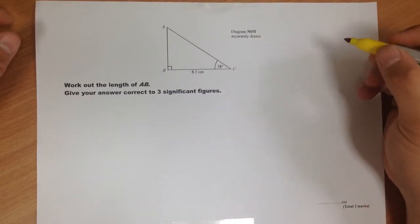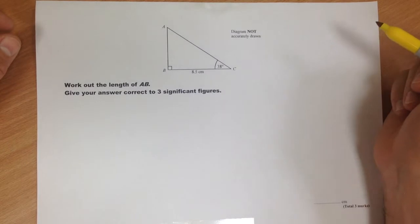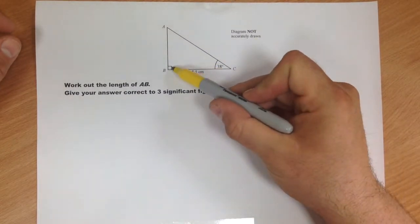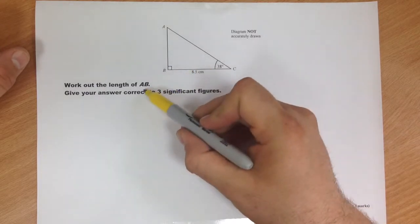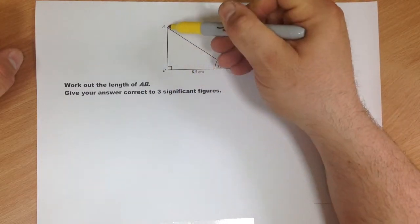Here we're going to look at a basic trigonometry question. You know it's trigonometry because it's a right angle triangle. There's an angle, you've been given one side, and you're trying to find out the length of AB.